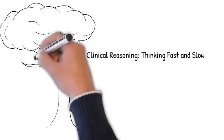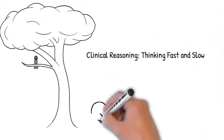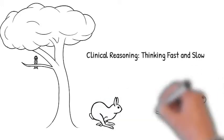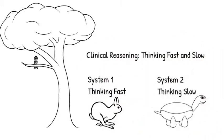There are several component skills of clinical reasoning. In this short video, we will discuss one component: thinking fast and slow, or System 1 and System 2.